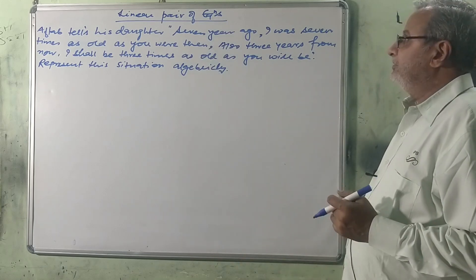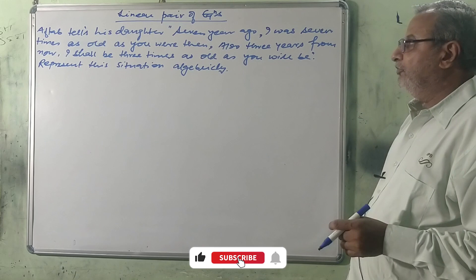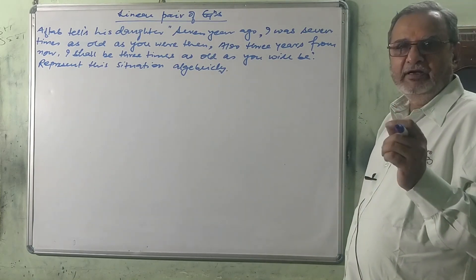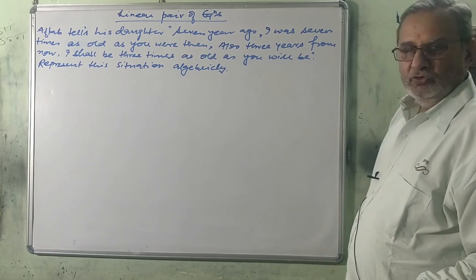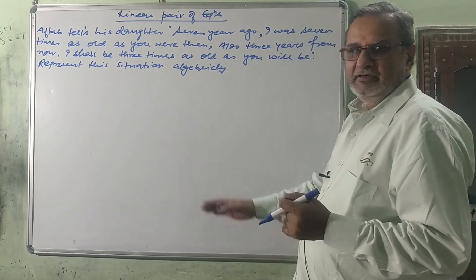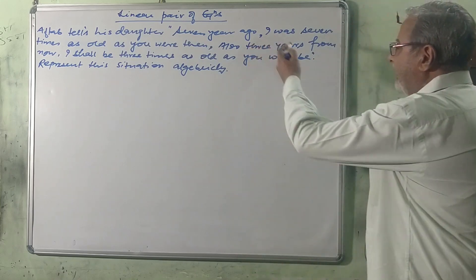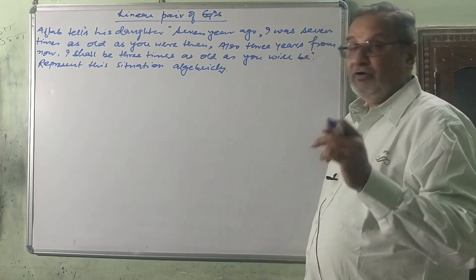The question is taken from linear pair of equations in two variables, from Exercise 3.1 of NCERT book 10th class. It is a situation where a father tells his daughter: seven years ago I was seven times as old as you were then.